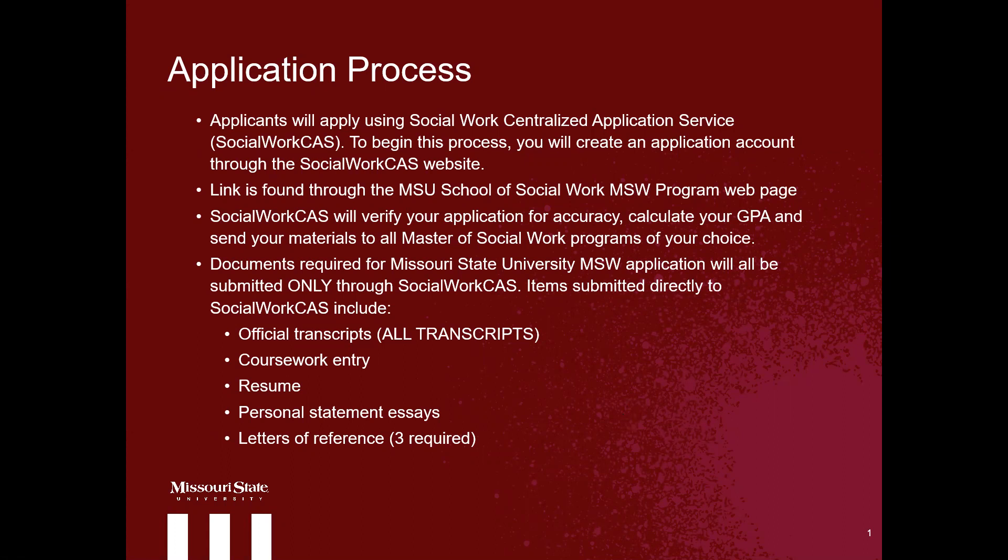The first thing that I want you to know is that your application will be through Social Work Centralized Application Service, also known as Social Work CAS. To begin the process of the application, you will create an application account through the Social Work CAS website. The link to the Social Work CAS website can be found through the MSU School of Social Work MSW program webpage.